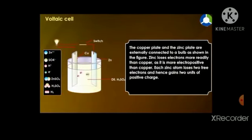The copper plate and the zinc plate are externally connected to this bulb as shown in the figure. So here zinc loses electrons more readily than copper as it is more electropositive than copper. So each zinc atom loses two free electrons and hence gains two units of positive charge. And because of the movement of these free ions the bulb glows. And hence we can see that the chemical energy is converted into electrical energy. This conversion is introduced by Alessandro Volta and this whole setup or arrangement is called the Voltaic Cell.